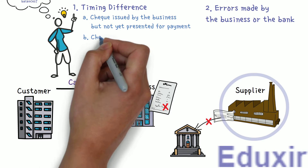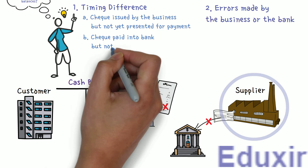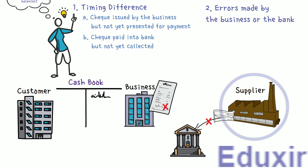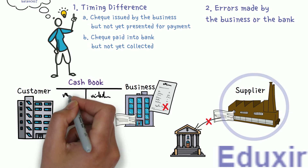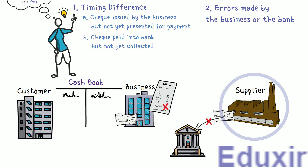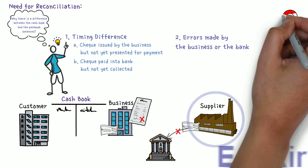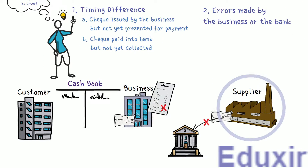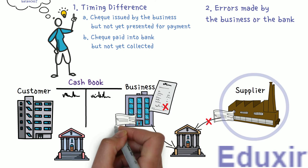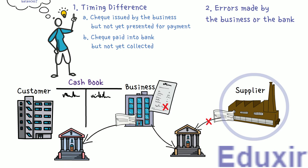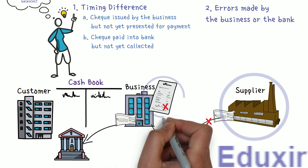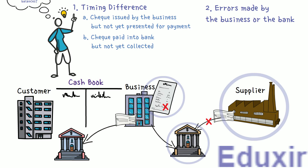The next reason is checks paid into the bank but not yet collected. When the business receives checks from its customers or debtors, they are immediately recorded on the debit side of the cashbook, so the cashbook shows more amount available in the bank. These checks could be from a bank in a different city, or from a different branch. In such cases, the bank may not have collected this check amount by the time the bank statement is received, causing a difference.